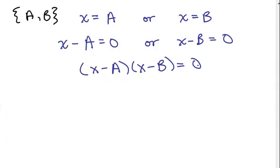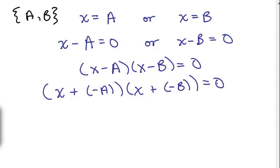I'm going to write X minus A and X minus B slightly differently. I'm going to write this as X plus a negative A times X plus a negative B. You'll see why I'm doing this in a minute. So I'm going to do the FOIL method. X times X is X squared.